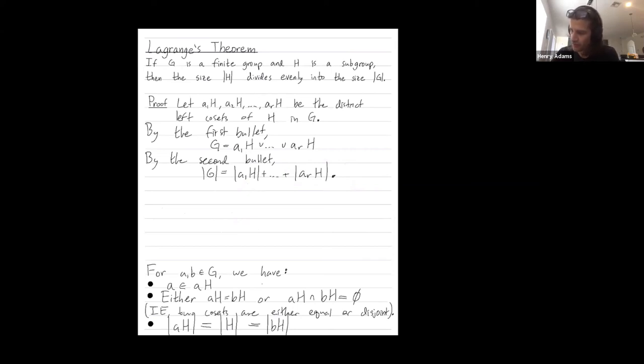And then finally, by the third bullet below, each coset has the same size. And that size is just the size of the subgroup H.